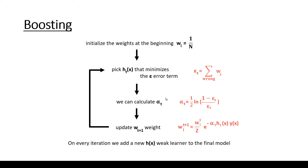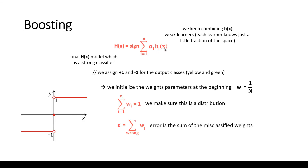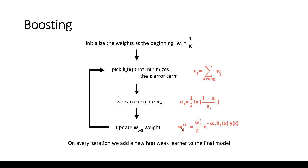Once we have the error term, we calculate alpha using the formula: alpha_t equals 1/2 times the logarithm of (1 minus the error) divided by the error. The t indices denote the values in the t-th iteration. After calculating alpha, we update the w weight parameters. Importantly, alpha is associated with the h(x) weak learner, while the w weight is associated with the samples in the dataset.